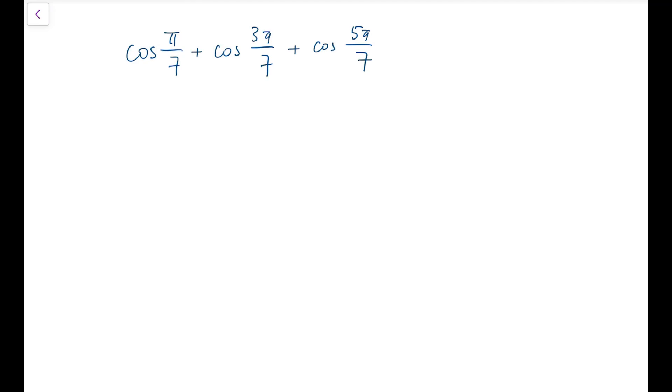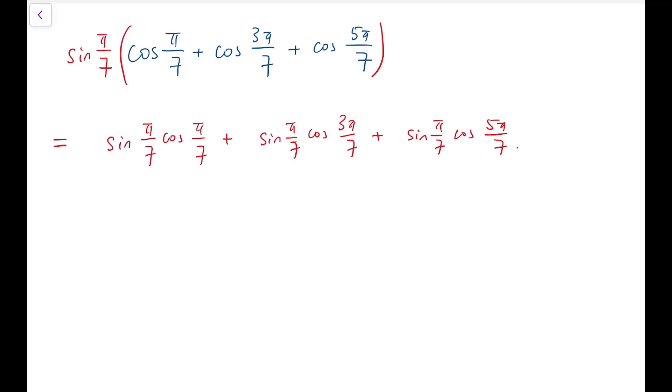Next, I'm going to perform a trick, which is to multiply this expression by sine of π over 7. Expanding, I will have sine π over 7 times cos π over 7 plus sine π over 7 times cos of 3π over 7 plus sine of π over 7 times cos of 5π over 7.